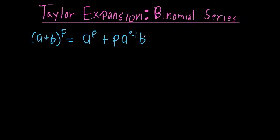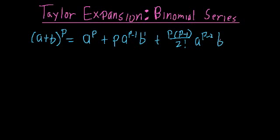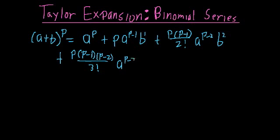Plus p times (p minus 1) over 2 factorial times a to the p minus 2 power times b squared, plus p times (p minus 1) times (p minus 2) over 3 factorial times a to the p minus 3 power times b cubed, and so on. With each term, the exponent on the a part goes down one and the exponent on the b part goes up one, eventually reaching plus b to the p power.